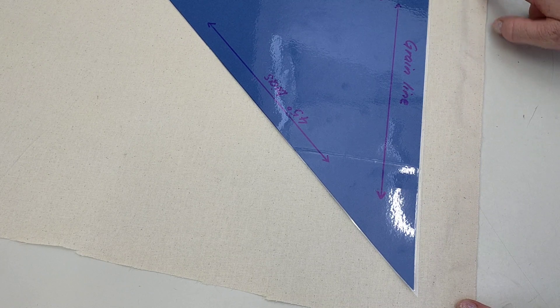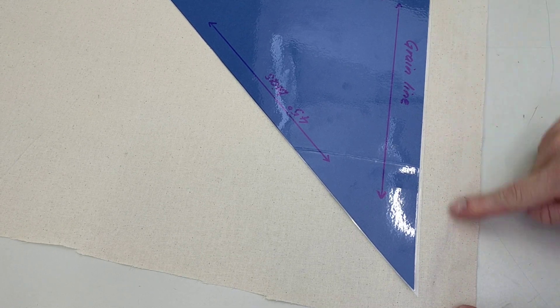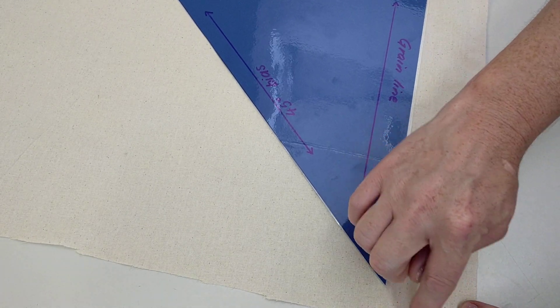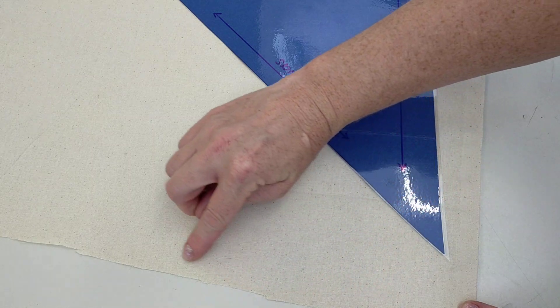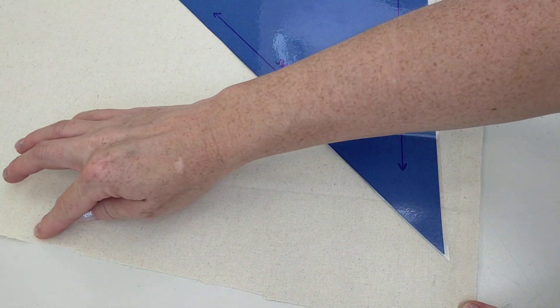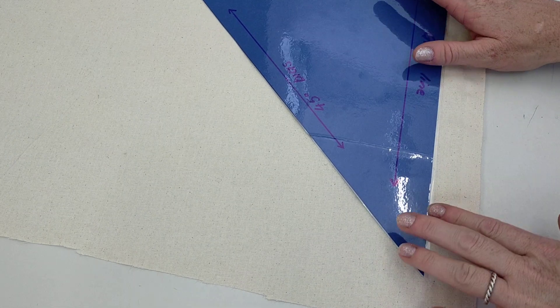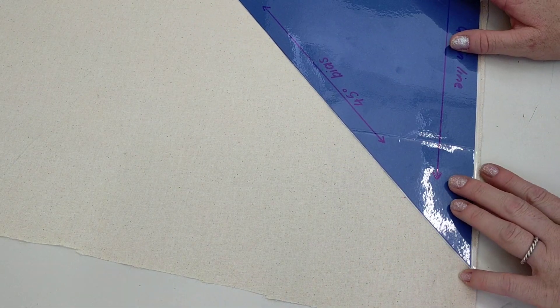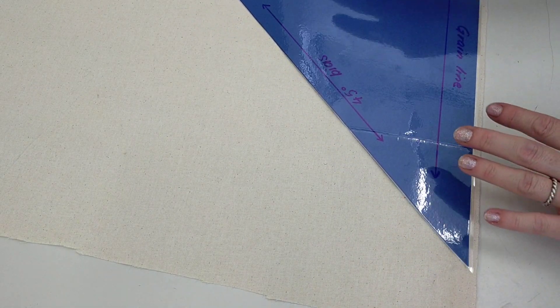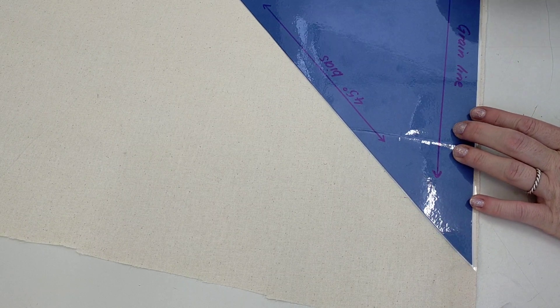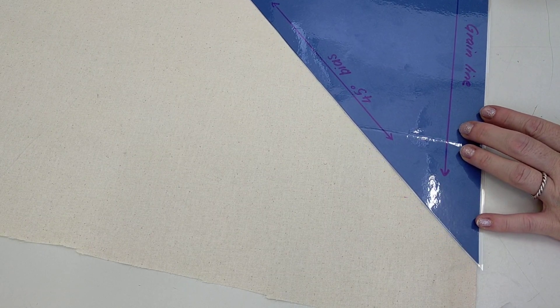So first step is we identify our selvage here, which is the finished edge of the roll, or the grain line, which you may be able to see running this way if you look at the weave of your fabric. But for us, you're better off using the selvage.